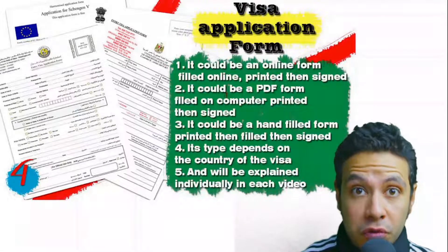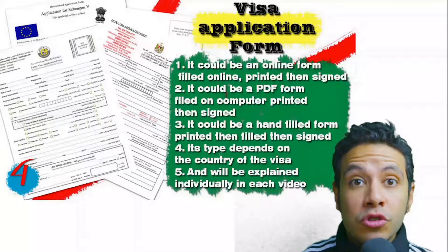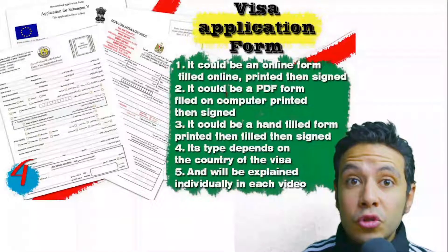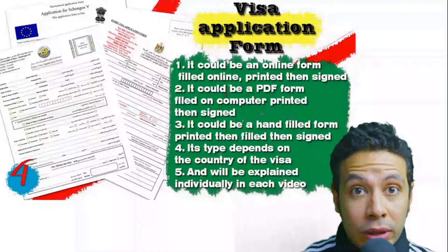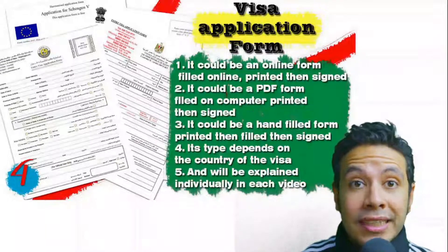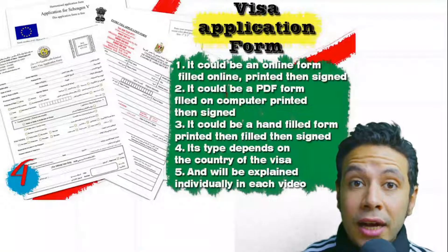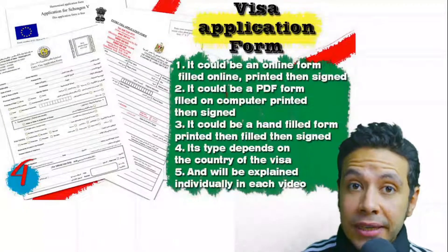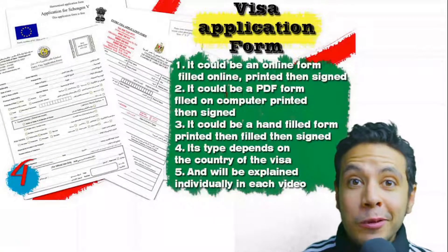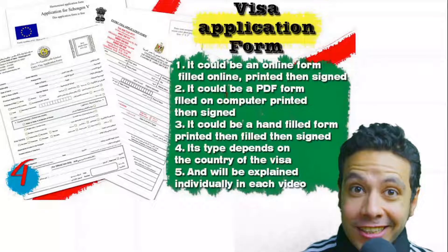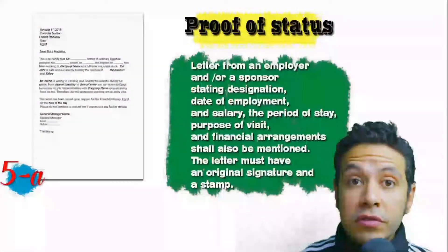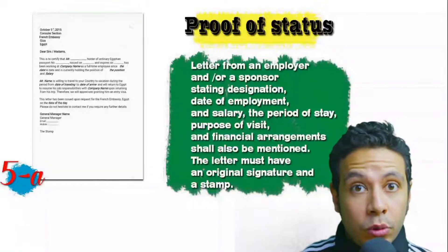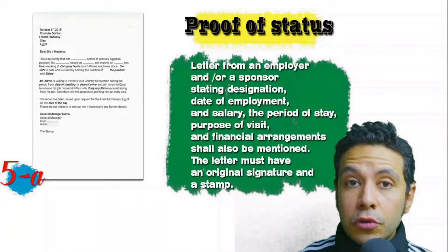Speaking about the visa application form: in general you need only one copy, but sometimes you might be required to submit two or even three. Visa forms differ from country to country. Generally you should print it and fill it manually, but many countries now provide their application form on an online platform so you can fill it online and then print and sign it. In most visa application processes you will also be required to provide a proof of status.